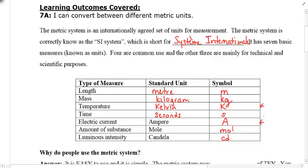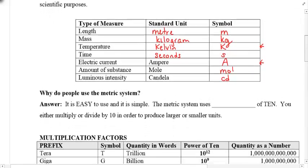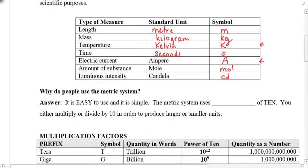Notice that all the symbols are a small case except for the Kelvin and the ampere. Anyone know why? That would be an interesting question to find out. Why would we have to capitalize the Kelvin and the ampere? So anyways, why do people use the metric system? Well, the answer is, it's easy, and it's simple. Because the metric system uses powers of 10, and we've looked at powers before in Math 9 already. So hopefully this is a little bit of a review. You can either multiply or divide by 10 in order to produce larger or smaller amounts.